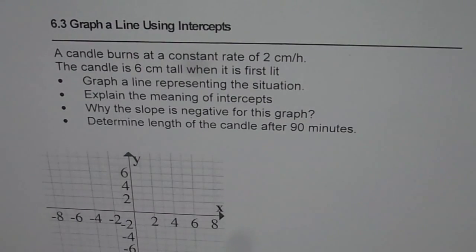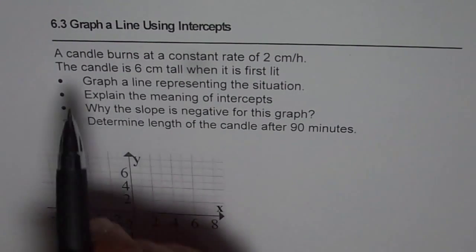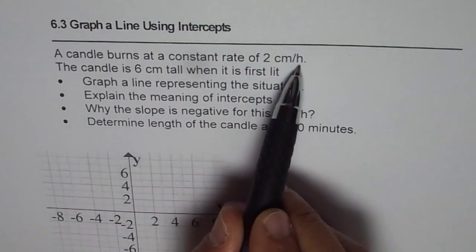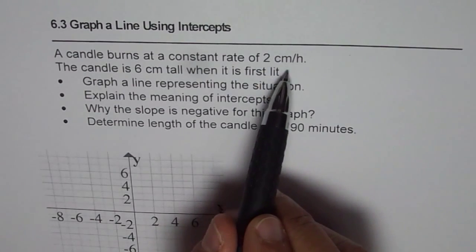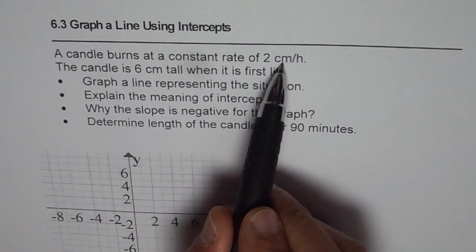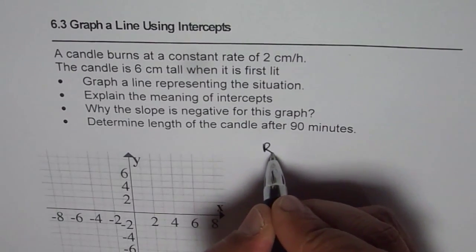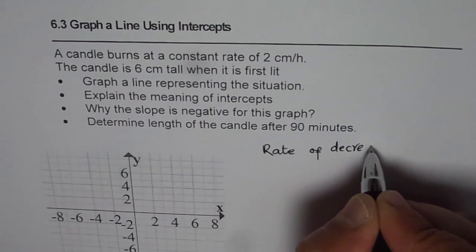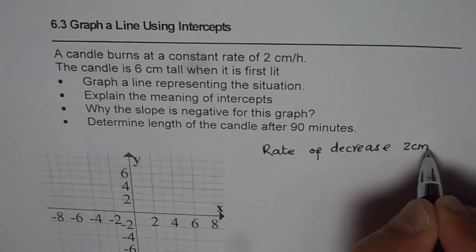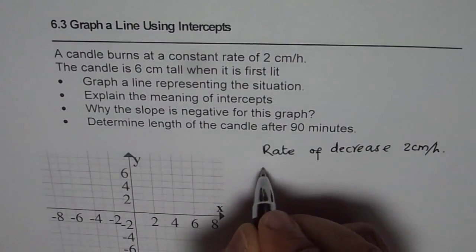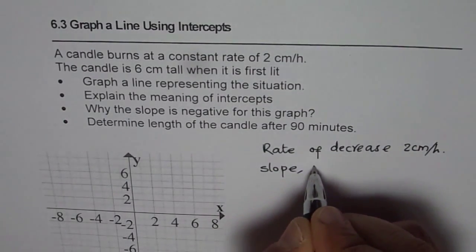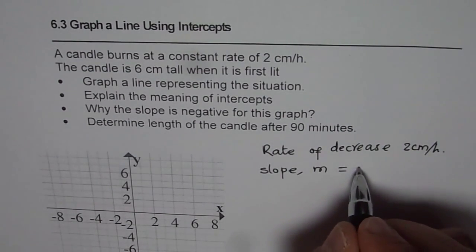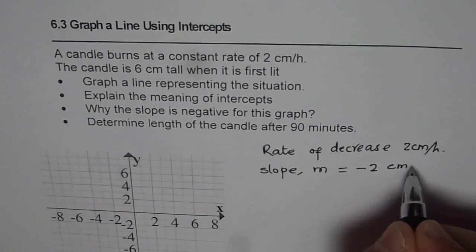So let us understand what the real question is. A candle burns at a constant rate of 2 cm per hour. It means its height is decreasing at the rate of 2 cm per hour. So we are given rate of decrease, which is 2 cm per hour. Rate is the same as slope for us when we talk about line, which you could say is m for us. Which decrease translates to minus 2 cm per hour.